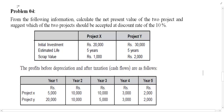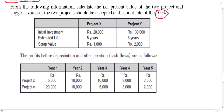Bismillahirrahmanirrahim. Now let's take one more example — Example number 4. Again we have to find out the NPV. From the following information, calculate the present value of 2 projects and suggest which of the 2 projects should be accepted at a discount rate of 10%. We have 2 projects: Project X and Project Y.